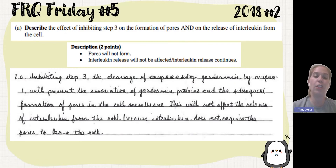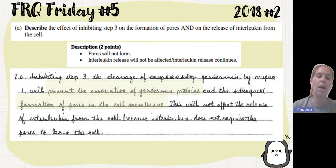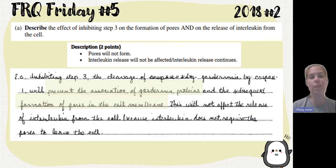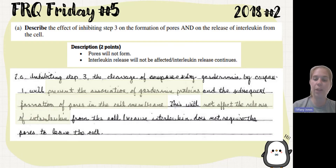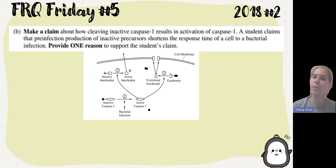Looking at the student's answer: they talked about how inhibiting step three and the cleavage of gasdermin will prevent the association of these proteins, subsequently inhibiting the formation of pores in the cell membrane — they got that point. They then said this will not affect the release of interleukin from the cell, earning their two points.